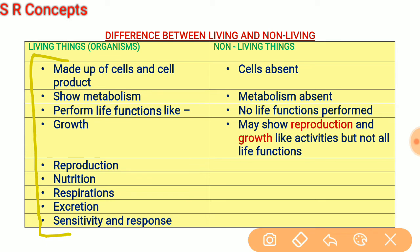The bodies of living organisms are made up of cells. All features of living organisms are carried out by chemical reactions occurring inside their cells. These chemical reactions are called biochemical reactions. Metabolism is the group of all these biochemical reactions taking place in living things.